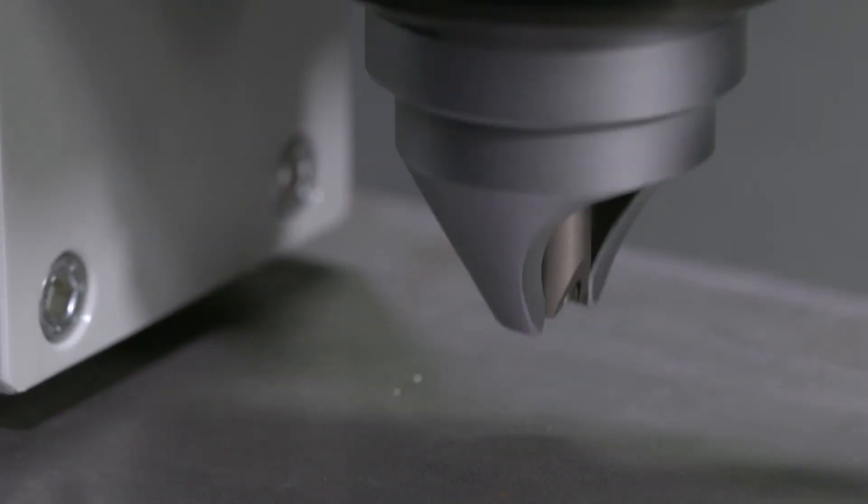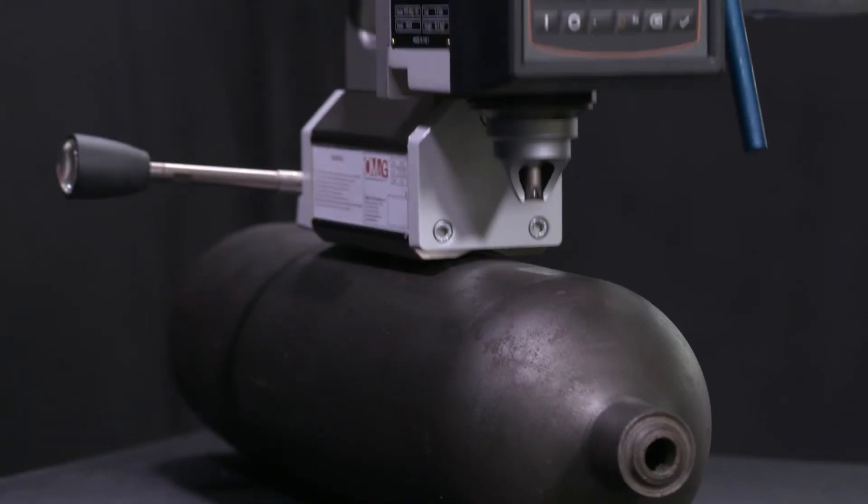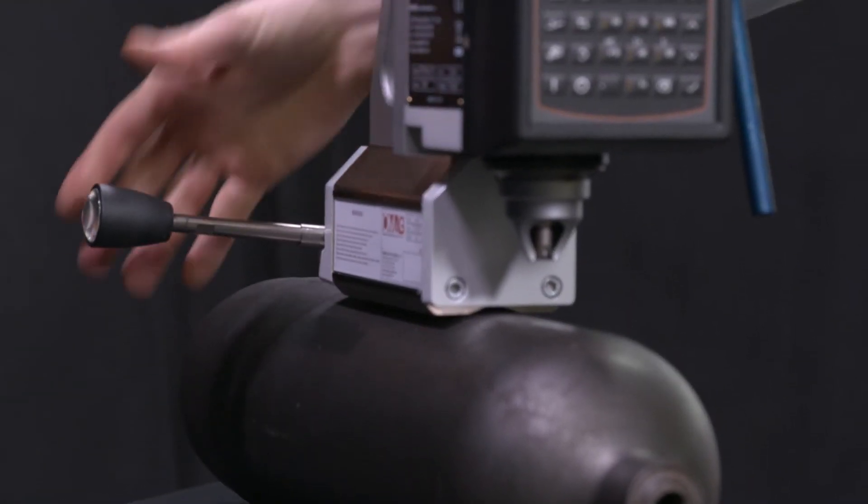The base has a magnetic clamping system, which means it can be used directly in the factory. It functions in any direction, even upside down.